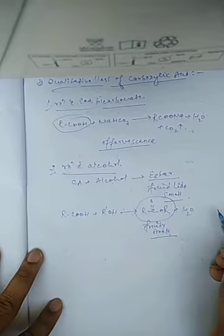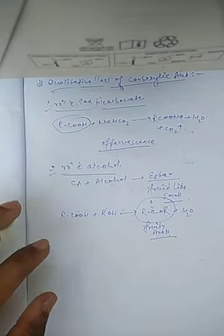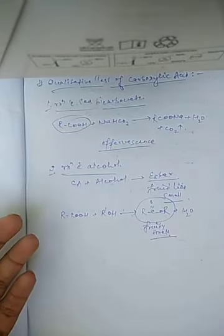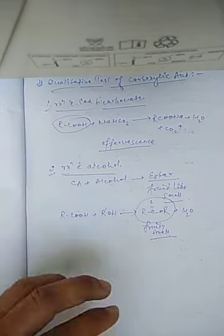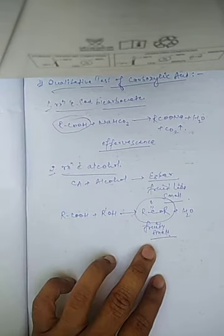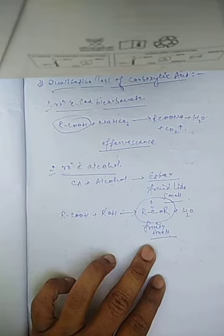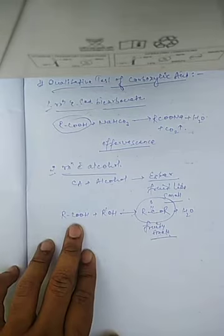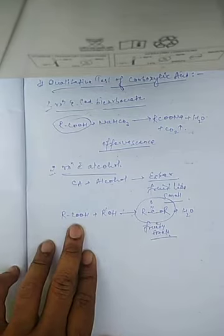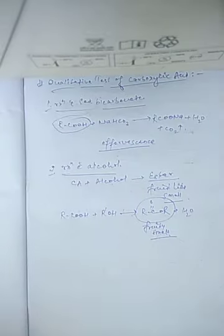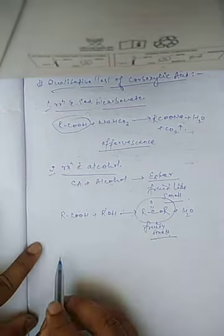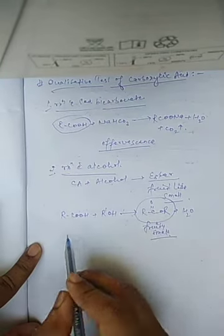So we can say that if, on adding alcohol to your unknown compound, you are observing and sensing a fruit-like smell, then it is possible that the compound you have been given has the functional group carboxylic acid.